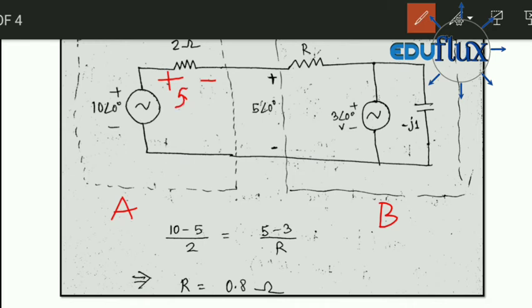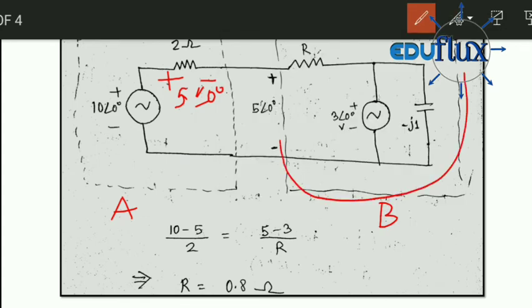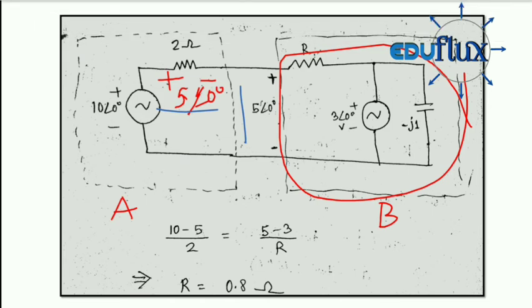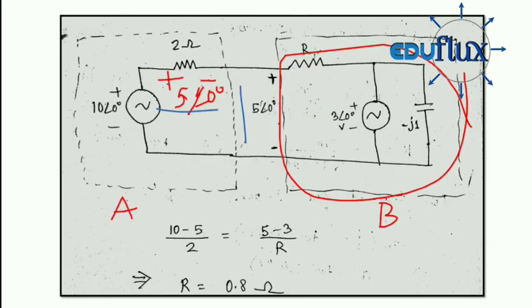This 10 angle 0 degree, or 10 volt if I say, this 10 volt will be divided equally between this 2 ohm resistance that is acting as the Thevenin resistance and this circuit B, this load part, this entire load part. 5 volt will be acting here, so 5 volt will be acting on this one and also on this one.